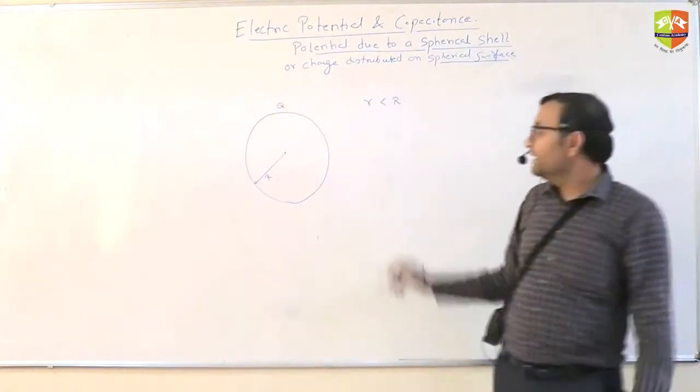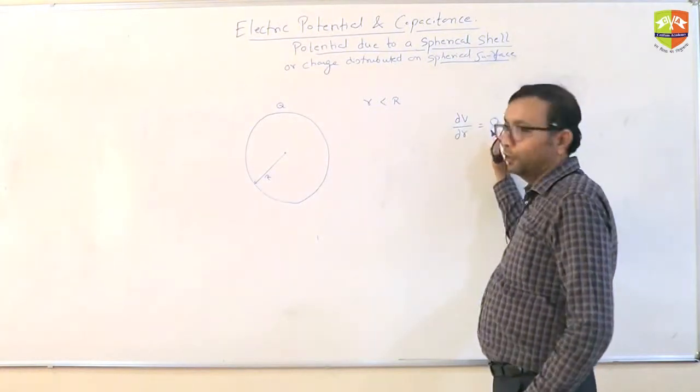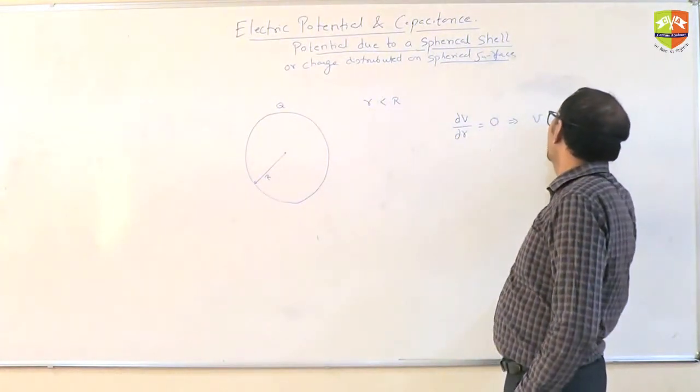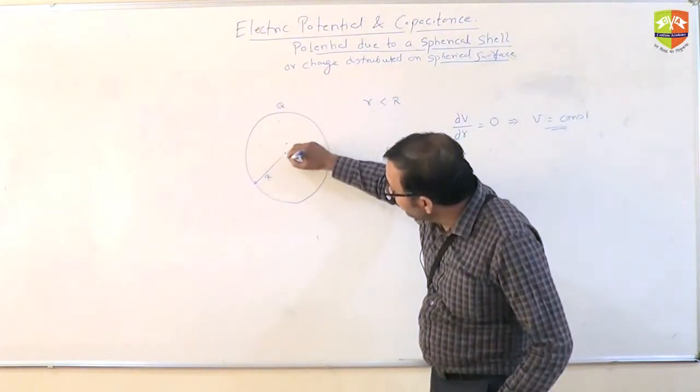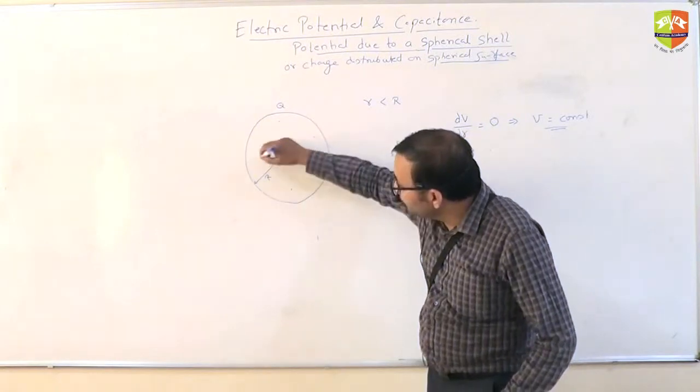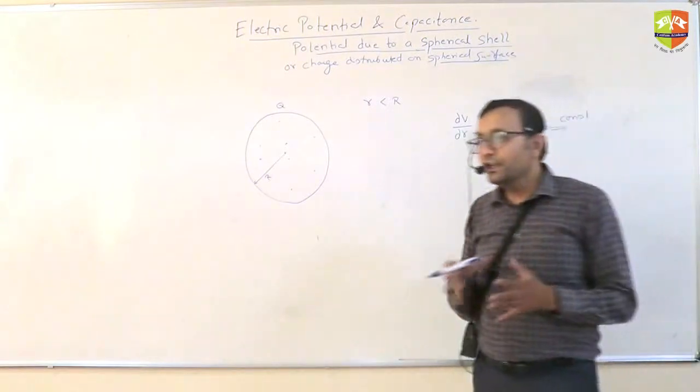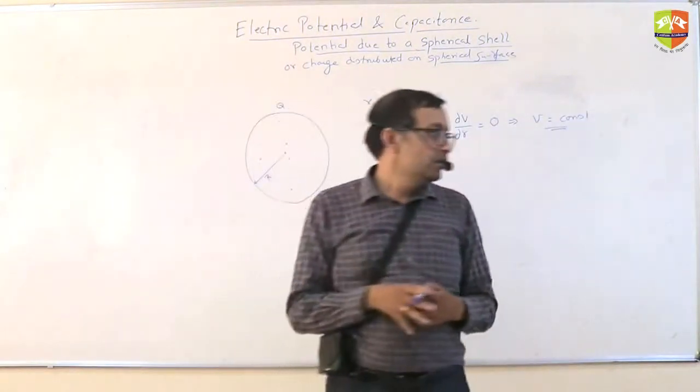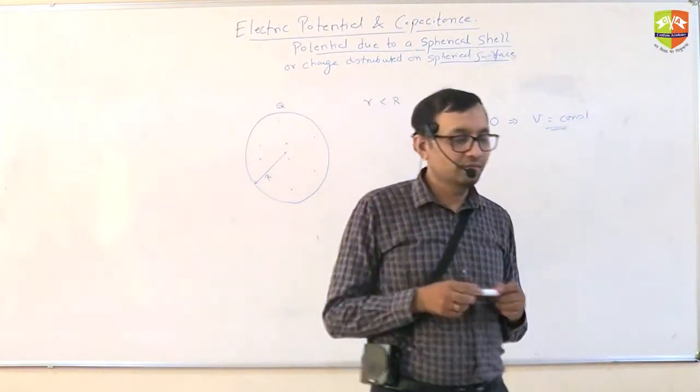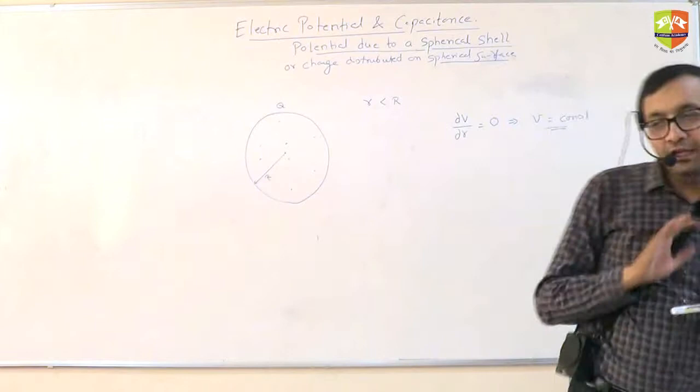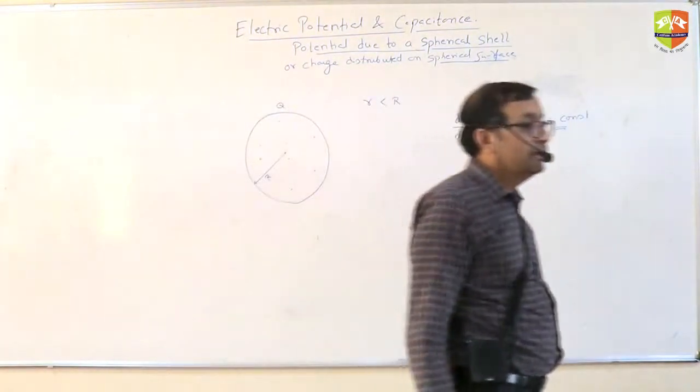So, basically, anywhere inside, dv by dr is zero. What does it mean? Potential is constant. Anywhere you go, whether you are near the center or away from the center, as long as you are inside, potential is constant. So, how much is that? You don't need any calculus, nothing. Just apply some logic, you'll get the answer. What is the potential inside?